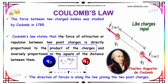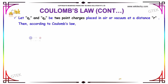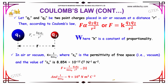The formula for the force of attraction according to Coulomb is F equal to K into Q1 into Q2 divided by R square. The direction of forces will be along the line joining the two point charges. Let us consider Q1 and Q2 to be the two point charges placed in air or vacuum at a distance R.